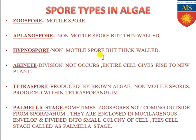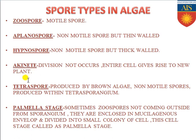Hypnospores are like the conidia present in fungi. Next is akinate. Akinate is a type of spore where division does not occur and the entire cell gives rise to a new plant. There is no division of this spore — the entire cell gives birth to the entire plant body. That is known as akinate.